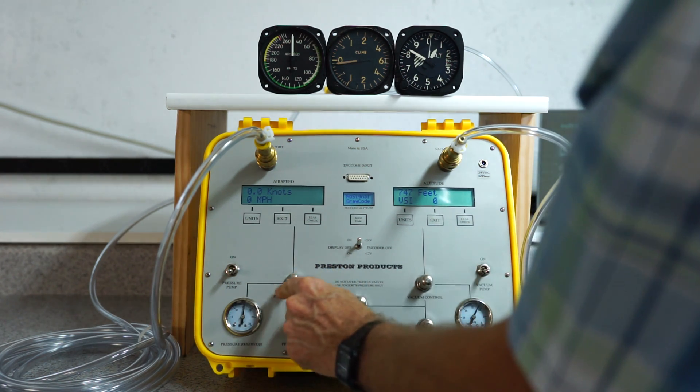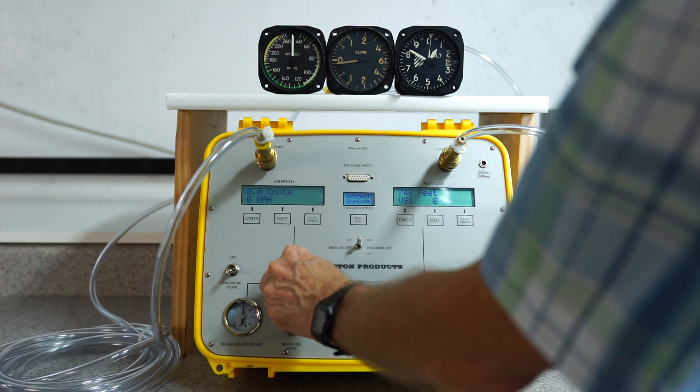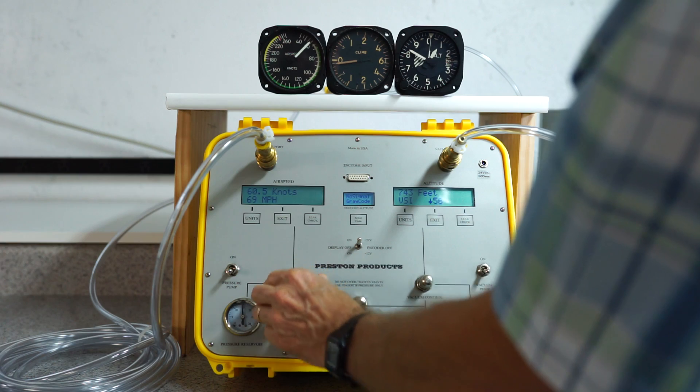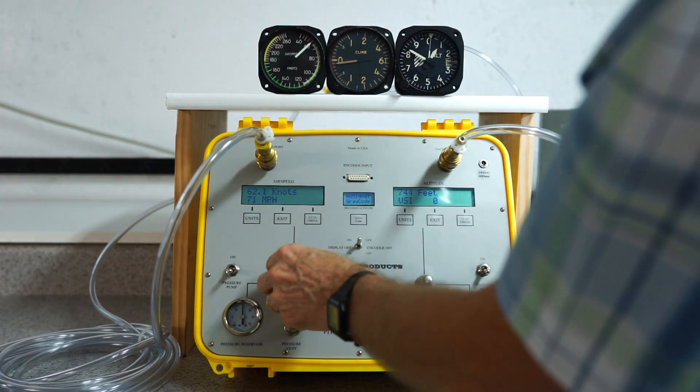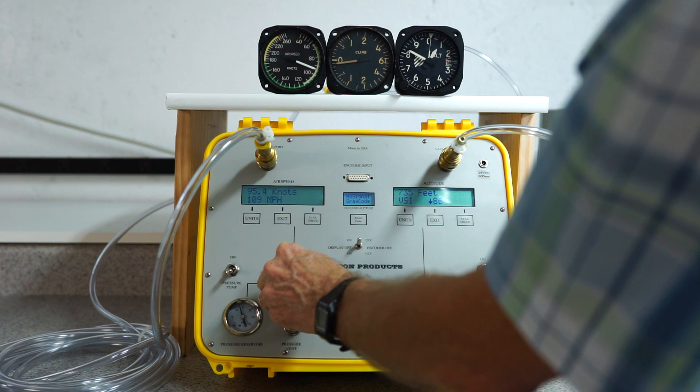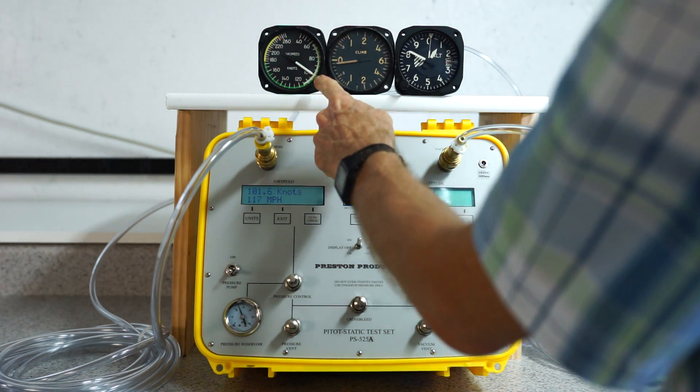And I'll open this pressure control valve and bring this up to a certain airspeed. That's about 60 knots here. And it's right at 60 there. And I can go up to about 100. 100 here. And 100 here.